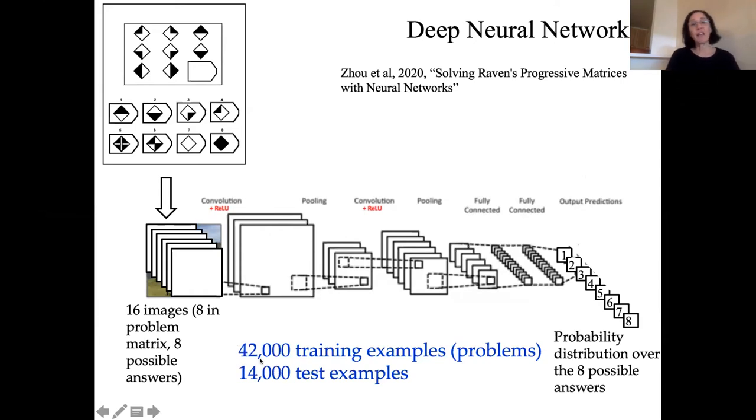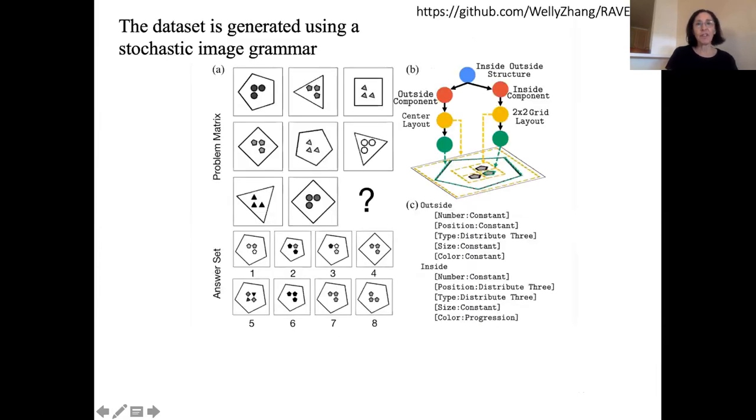Where did they get all these training examples? They had to generate them. Raven, back in the early part of the century, created 60 problems. This group came up with a grammar, where they were able to stochastically sample from the grammar to create any number of possible problems.